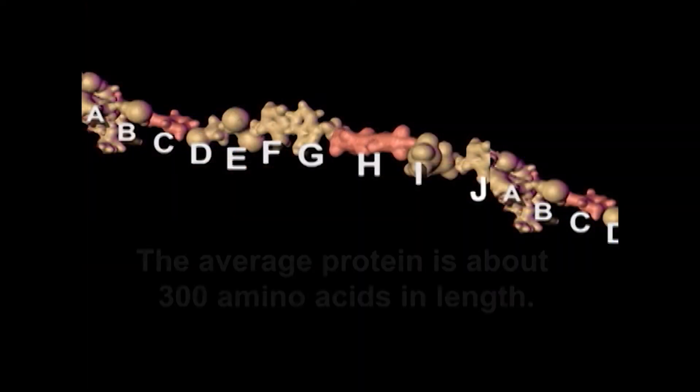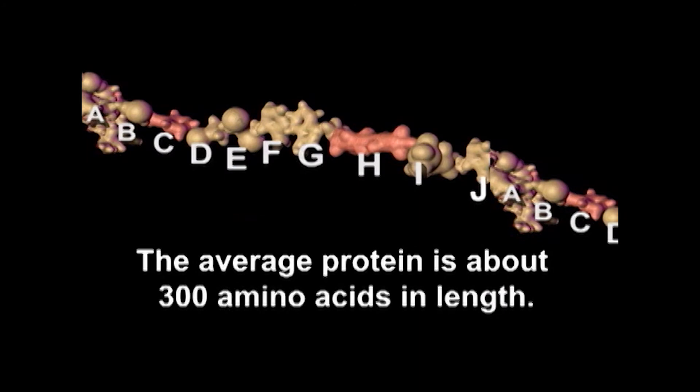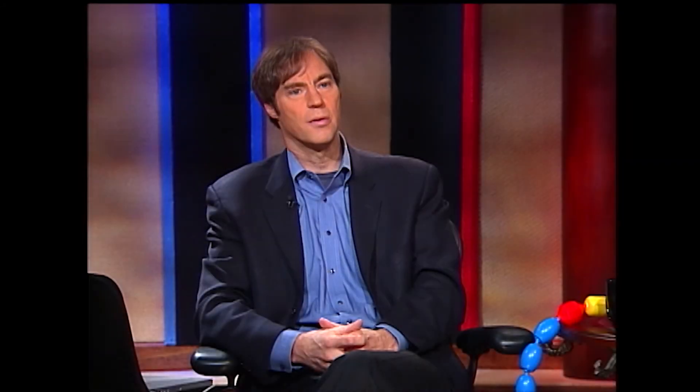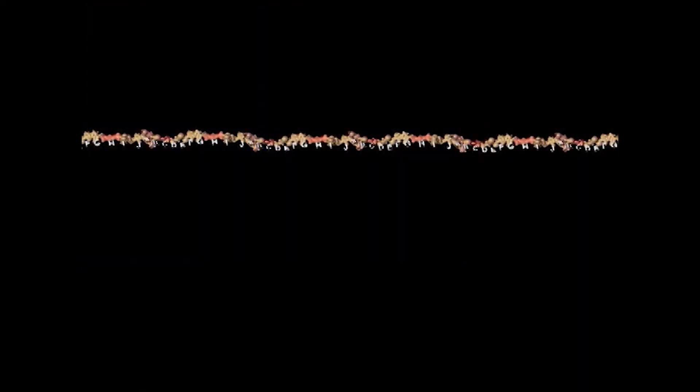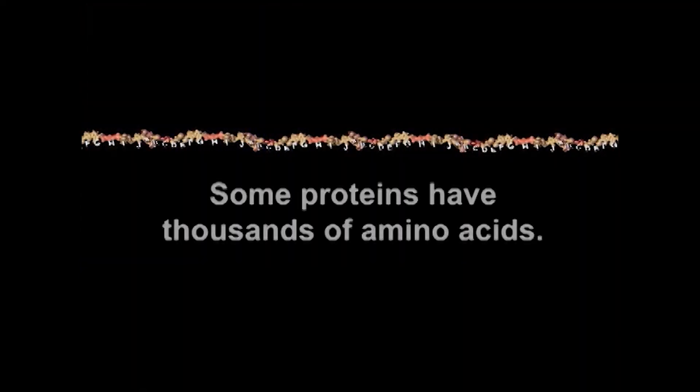How many amino acids actually form a protein? What's the smallest and what's the largest? The average protein is on the order of 300 amino acids in length, all linked together. You have very short hormones that you can make with eight or ten, but typically you need about 300, though some proteins even have thousands.